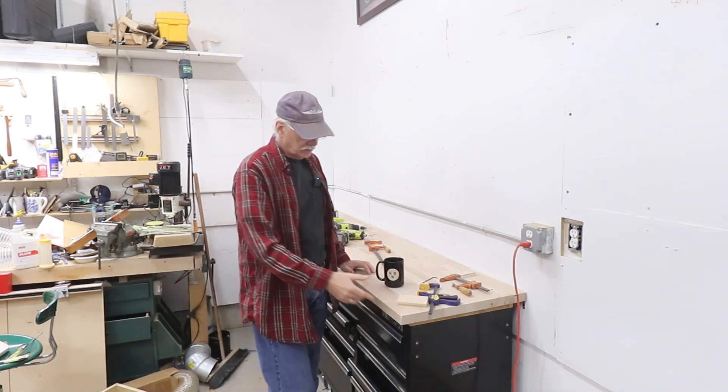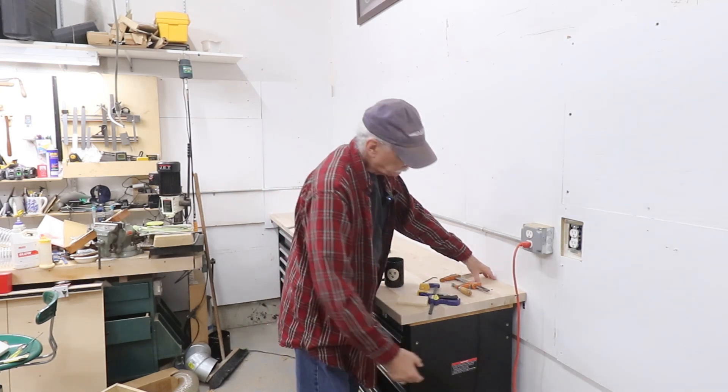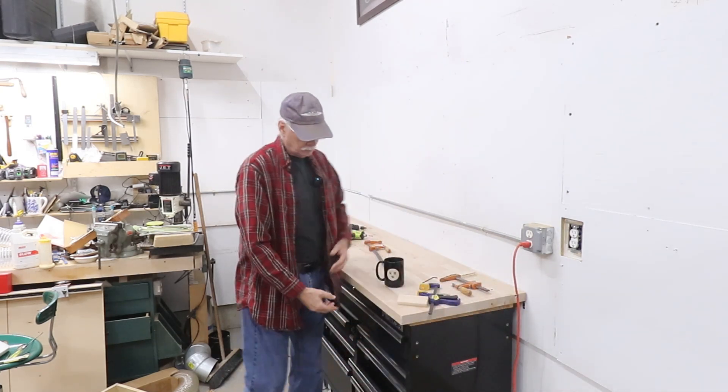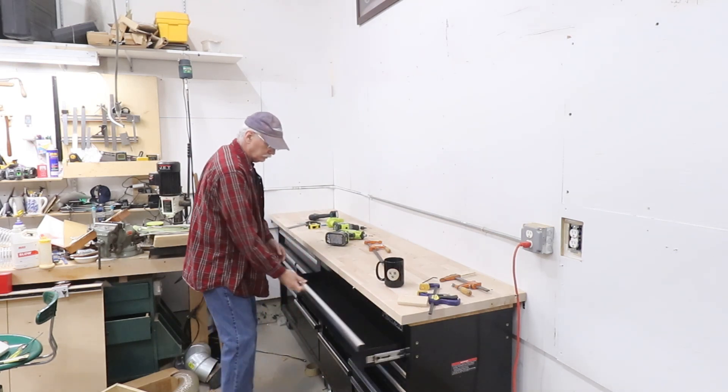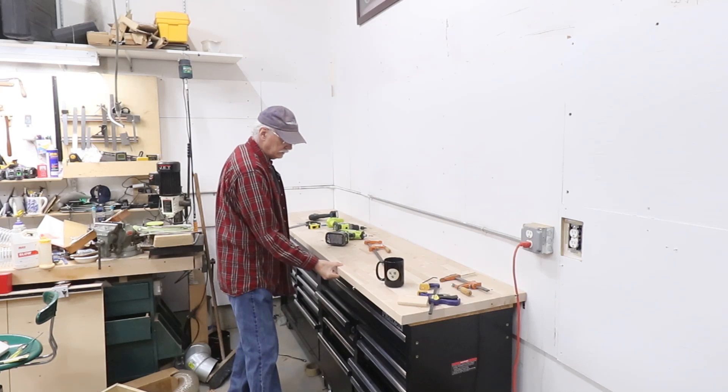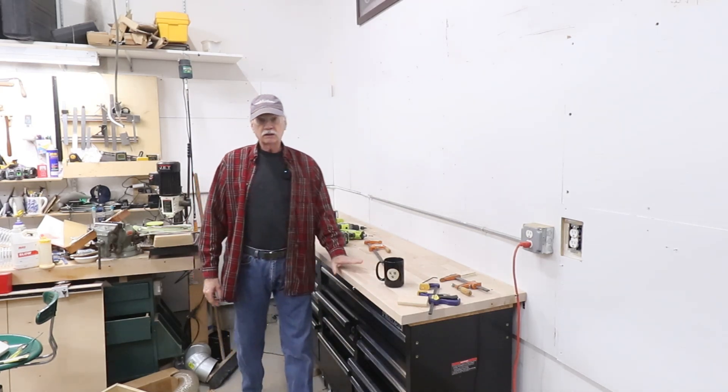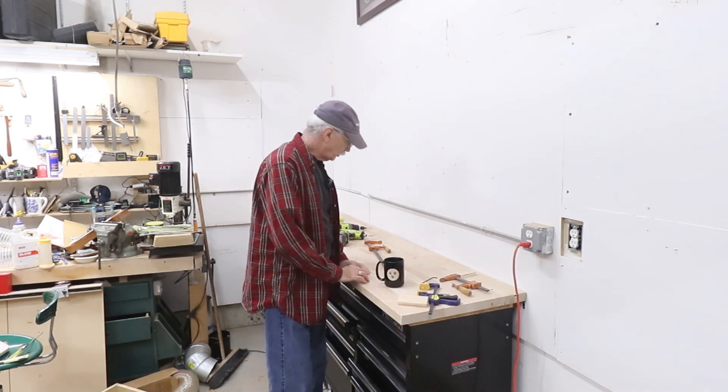Because the cabinets are 18 inches and this is 22, I had to block it off the wall to get everything accessible when you open the drawer. Now I've also got a two inch lip on the overhang on the top so we can clamp things to the edge of the bench if we want.